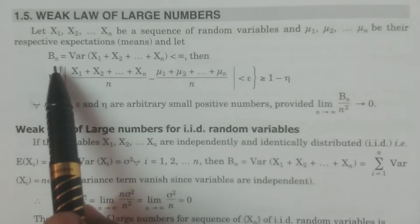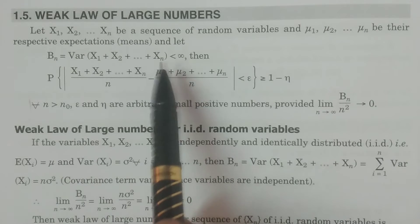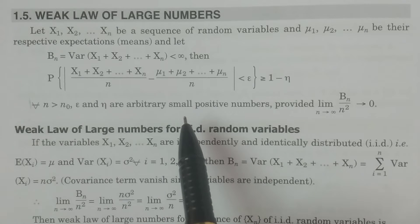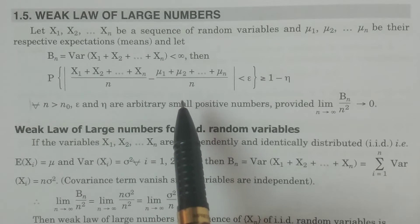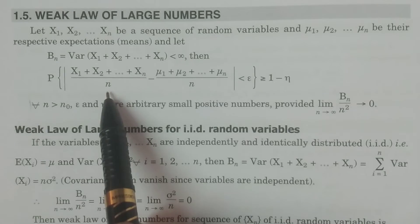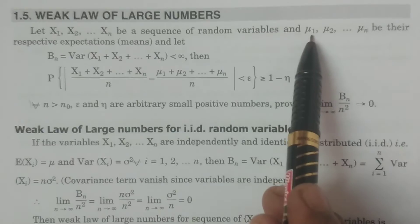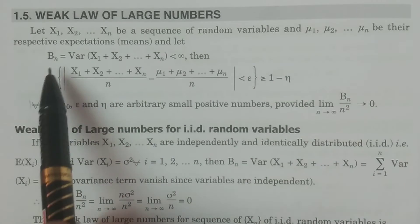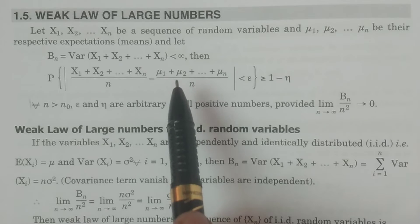Also, consider Bn equal to the variance of x1 plus x2 plus ... plus xn. The property depends on the sum of independent random variables x1 plus x2 plus ... plus xn and their means. If the means of x1, x2, ..., xn are μ1, μ2, ..., μn, and Bn equals the variance of x1 plus x2 plus ... plus xn, which is less than infinity — meaning it exists as a finite value.